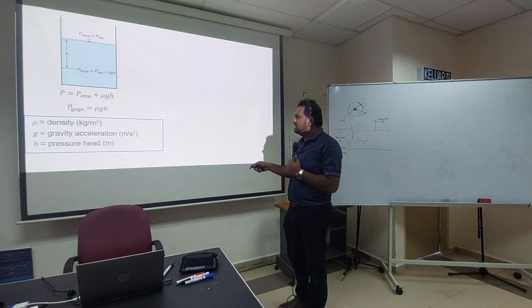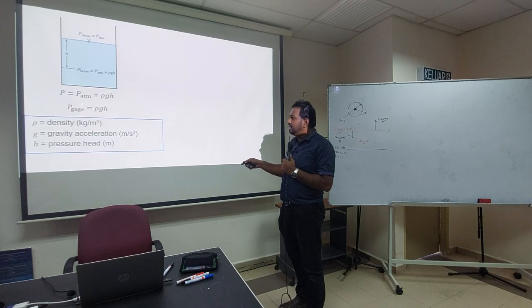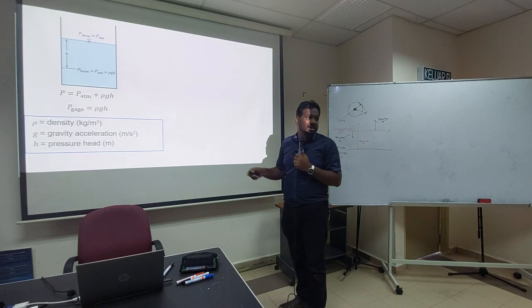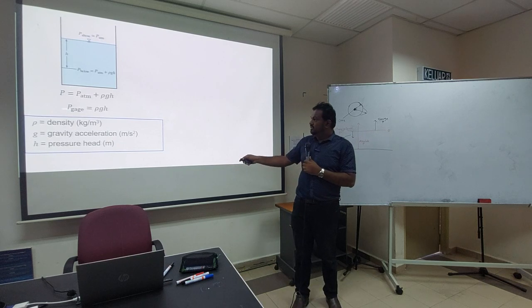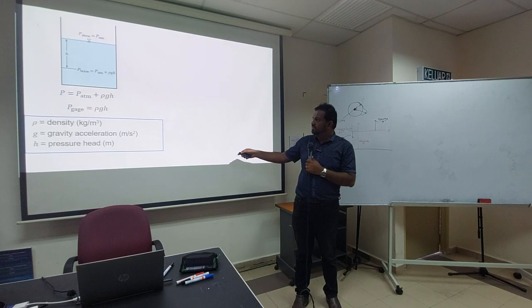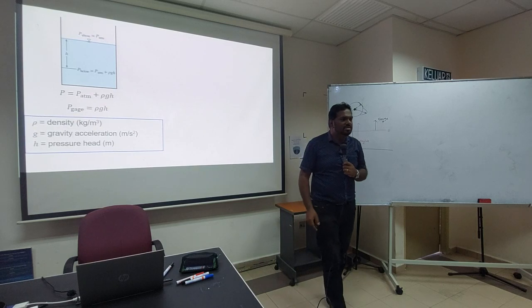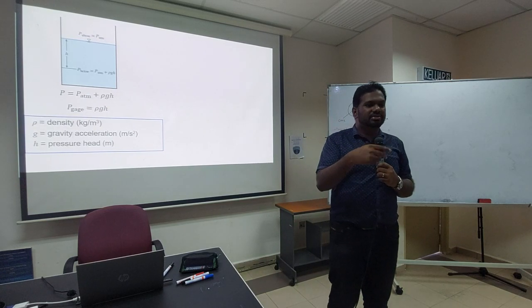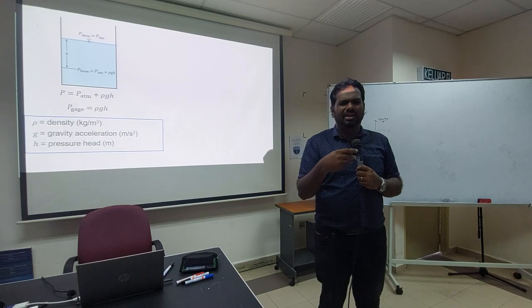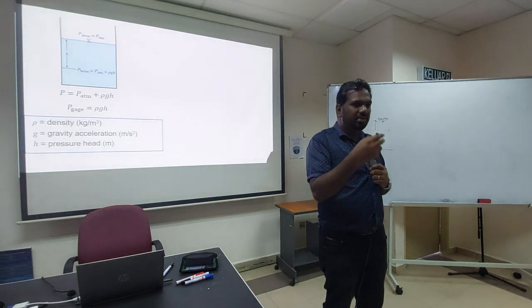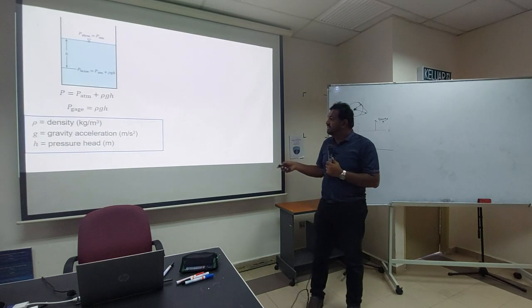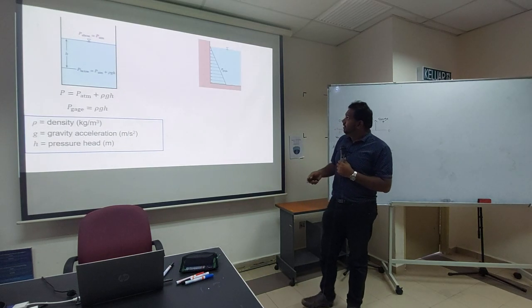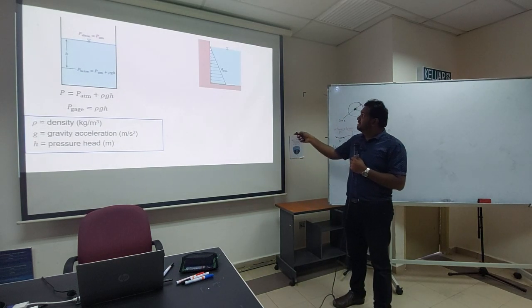For gauge pressure, atmospheric pressure becomes zero. So zero plus rho-g-h means gauge pressure equals rho-g-h. This is the formula we will always use for calculations. We will do some questions tomorrow — around six questions for you to get familiarized with this.